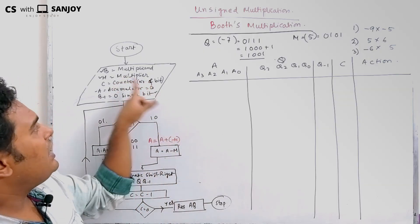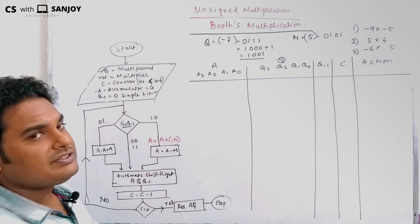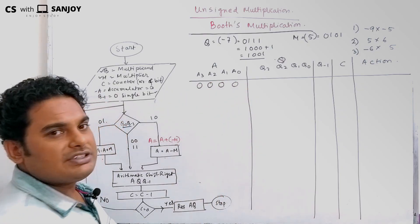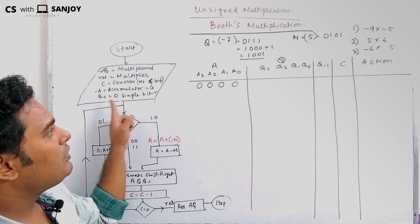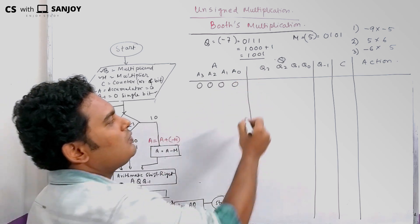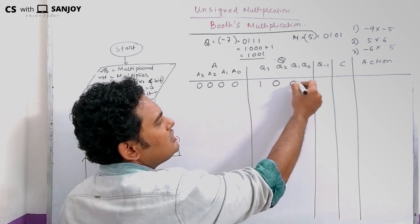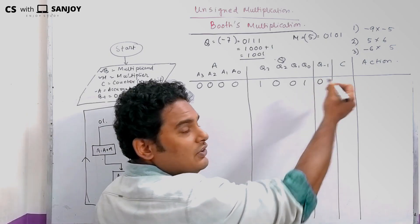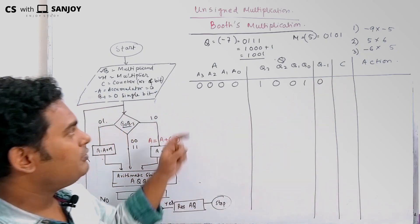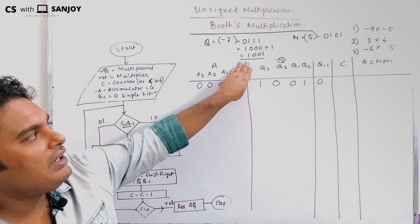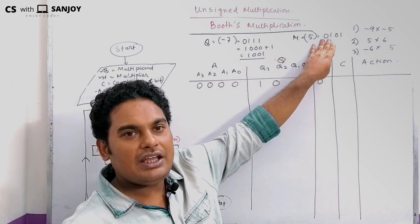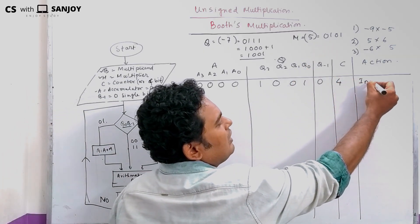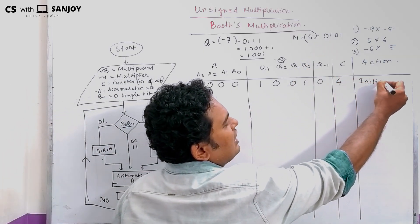The accumulator A should be initialized with 0. Q value is 1001 — so Q is 1001. Q minus 1 is 0. C is the number of bits, which is 4. Multiply and initialization: C equals 4, A equals 0000, Q minus 1 equals 0.